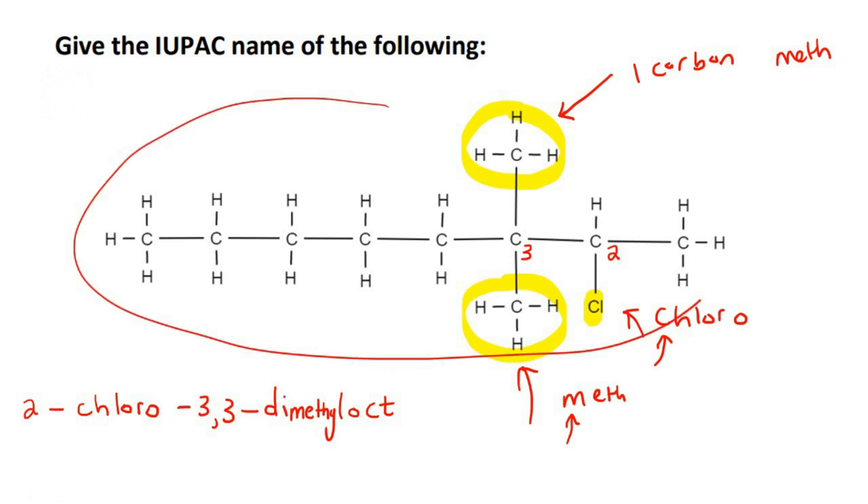And then this molecule is a halo-alkane because it's got a halogen. So this is a halo-alkane. Halo-alkanes end with A-N-E, just like alkanes do. So that is the name of this: 2-chloro-3,3-dimethyloctane.